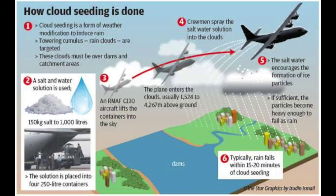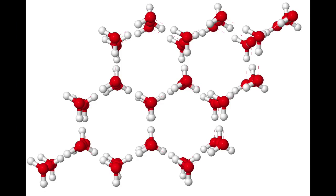Cloud seeding works by inducing nucleation. Nucleation is the formation of a new structure. Essentially, the process introduces more particles for the water in the air to crystallize around, which leads to increased rainfall. Silver iodide is a common chemical used, as well as calcium chloride, especially in warm or tropical climates.